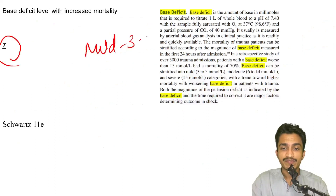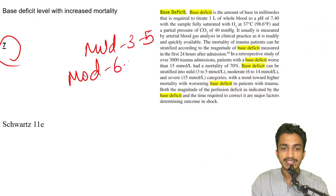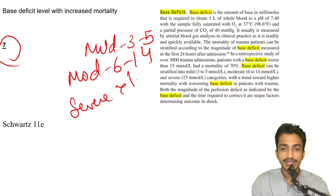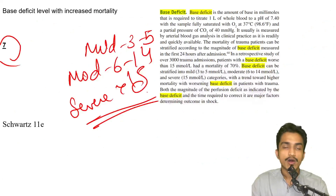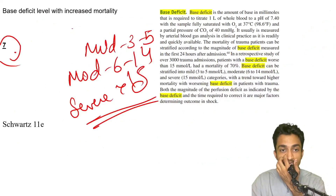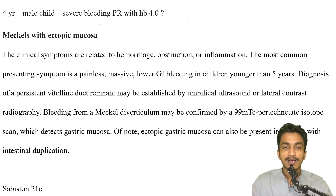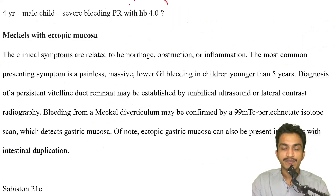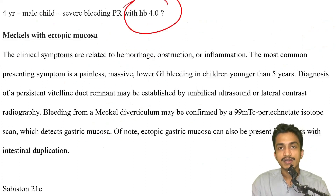Base deficit with increased mortality, taken from Schwartz Shorts: mild base deficit is 3 to 5, moderate is 6 to 14, and severe is greater than 15. The answer should be 7 — the highest value given in the options — which is associated with increased mortality.